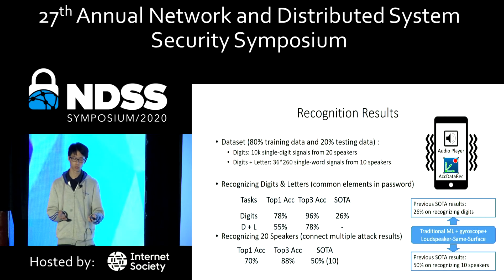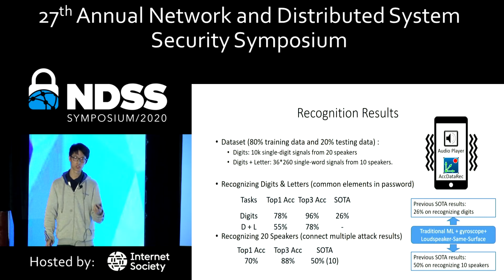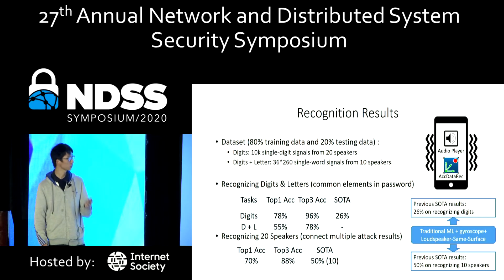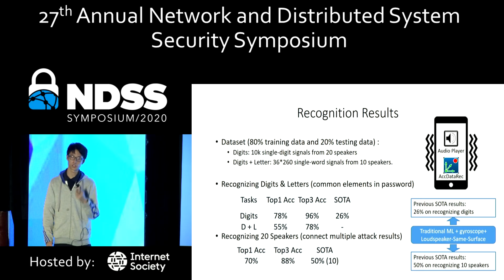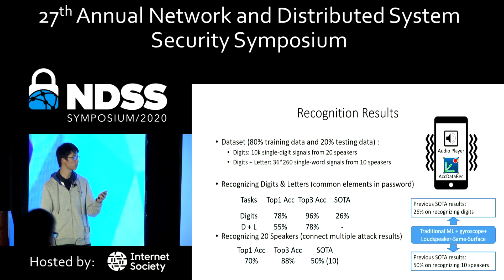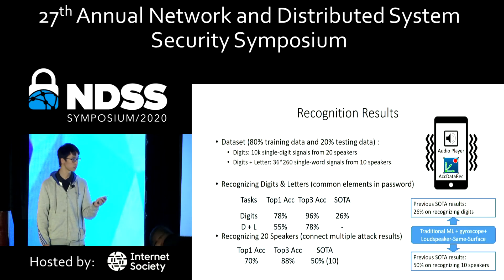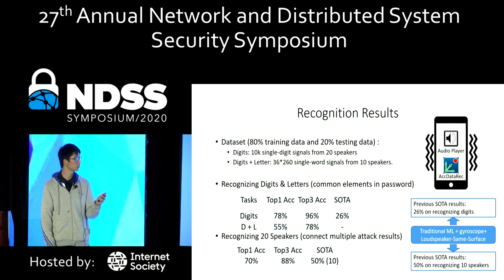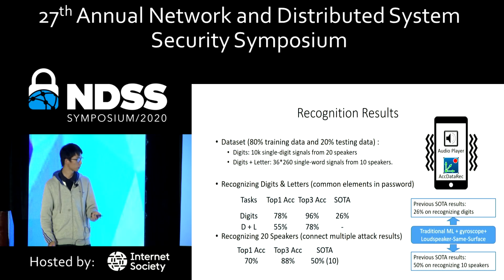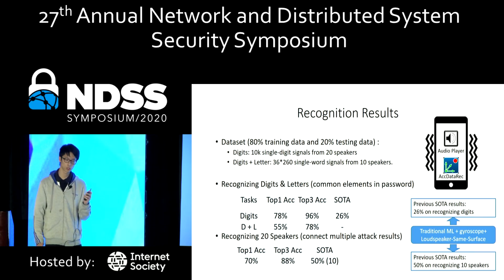Our speech recognition model outperforms the state-of-the-art model significantly in recognizing digits, letters, and speakers. When recognizing digits only, our top-1 accuracy outperforms the state-of-the-art model by 52%. When recognizing digits plus letters, our model achieves 55% top-1 accuracy and 78% top-3 accuracy. For speaker recognition, our top-1 accuracy reaches 70% when recognizing 20 different speakers.